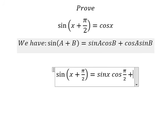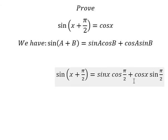This gives us sin(x)cos(π/2) + cos(x)sin(π/2). We know that cos(π/2) = 0 and sin(π/2) = 1.